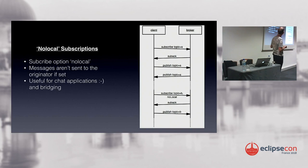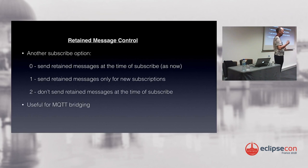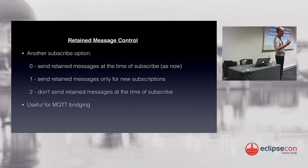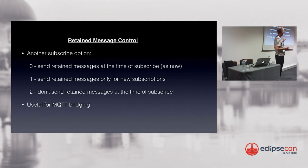We have a few enhancements to subscriptions, like the no-local option available in JMS, where the sender of a message doesn't want to receive that message back. We also have some control over retained messages — a feature of MQTT where you can set the last known good value for a topic, such as the pressure in an oil pipeline. This provides some problems in bridging scenarios. Now there are options to never receive retained messages on subscribe, or only if the subscription is new.